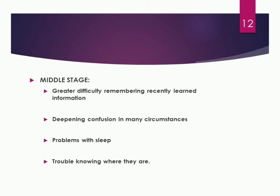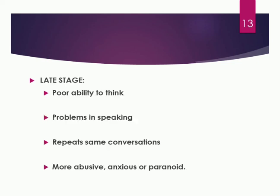In the late stage, signs are more severe: poor ability to think, problems in speaking — they miss out or forget words — and they repeat the same conversation, thinking the information was not communicated. They may become more abusive in language, more anxious, and more paranoid. Paranoid here means they act differently, with an altered thinking status. These are the clinical features of Alzheimer's disease.